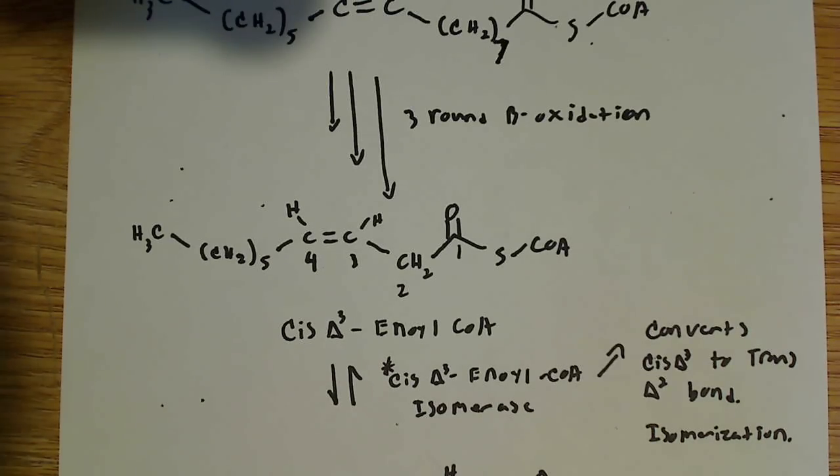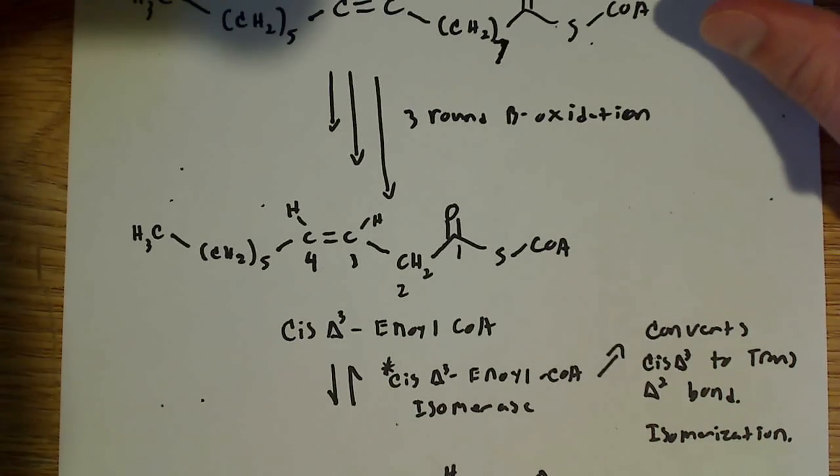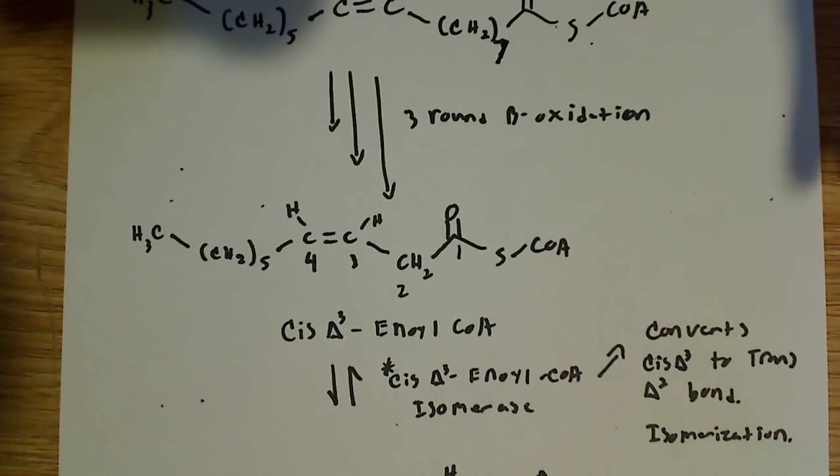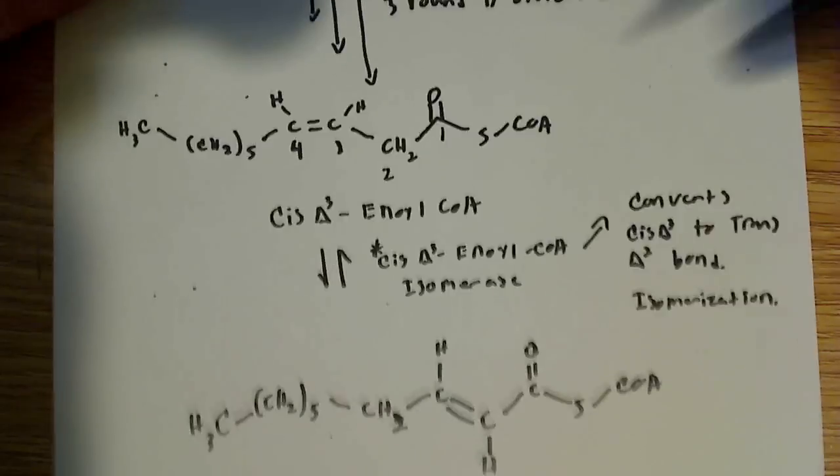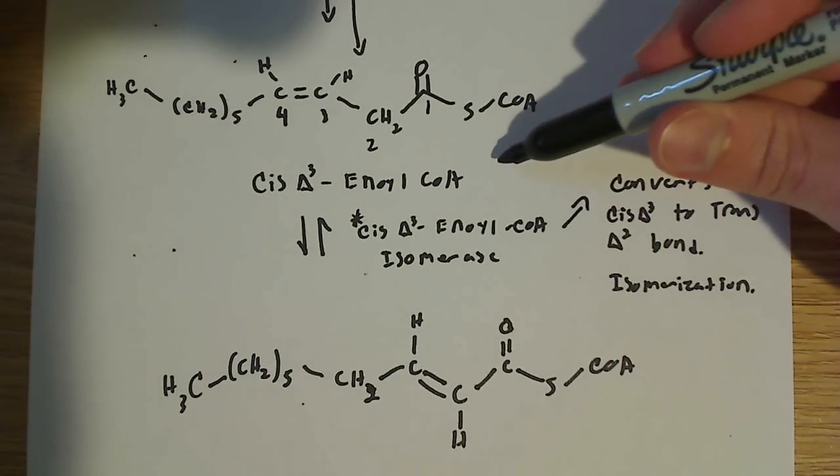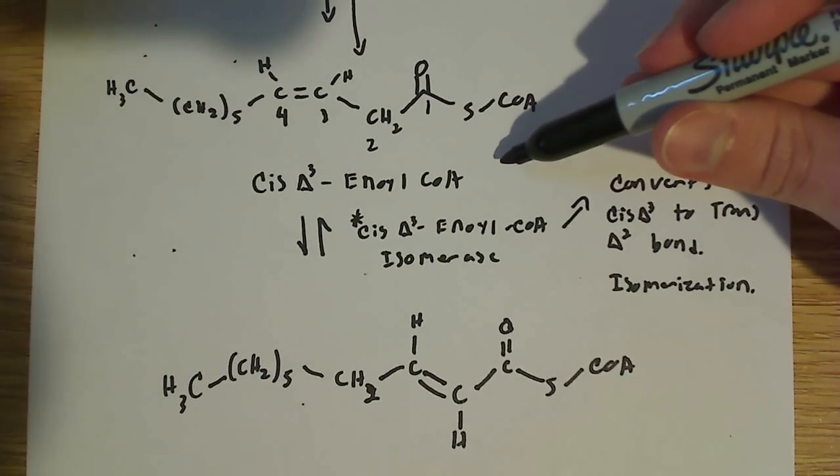And we need to find a way to get rid of that cis double bond. Because we need to make that cis double bond a trans double bond in order for beta oxidation to continue. So with this molecule, cis delta-3 enol-CoA, okay, we have a special enzyme, of course.